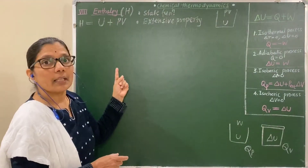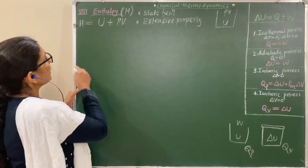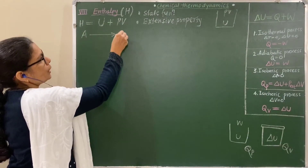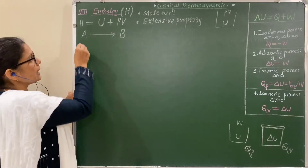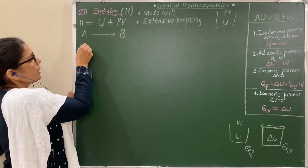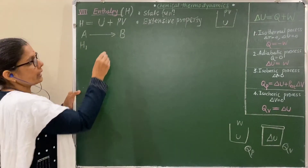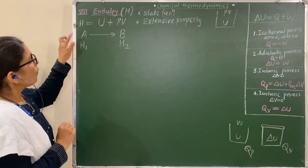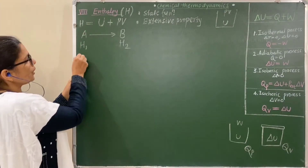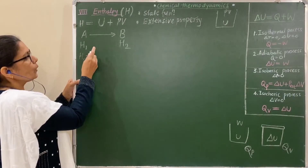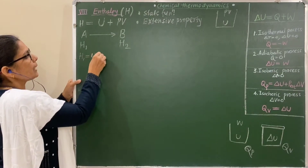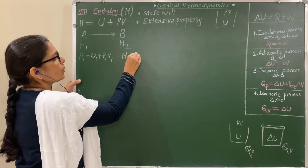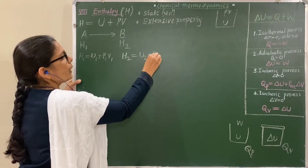Consider a process where A is converted into B. In the initial state, suppose the enthalpy is H1, and in the final state the enthalpy is H2. Since enthalpy H = U + PV, we write H1 = U1 + P1V1 and H2 = U2 + P2V2.